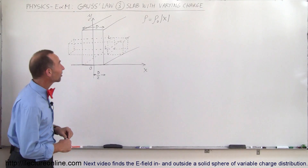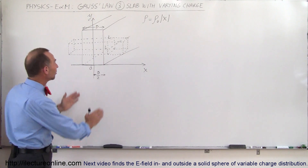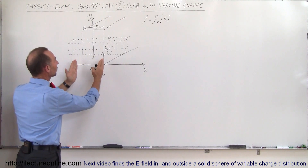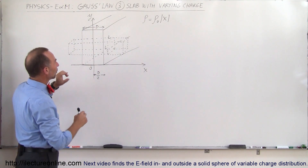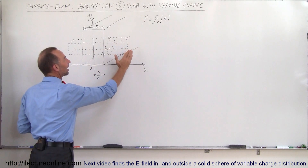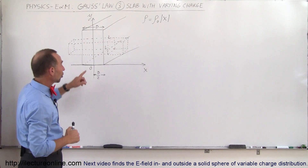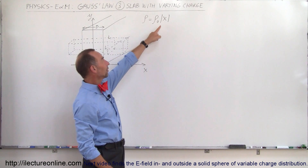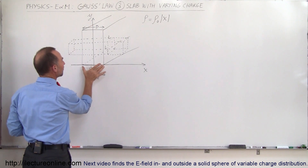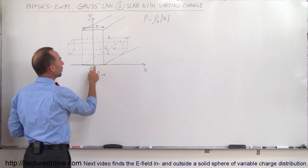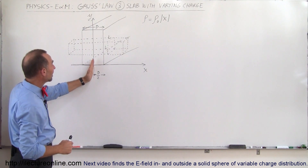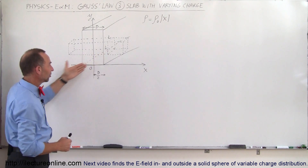Welcome to ElectronLine. Here we have a nice example that works perfectly with Gauss's law. It's an infinite slab — imagine an infinite slab in all directions with a thickness equal to d — and we're going to use a Gaussian surface to figure out what the electric field is like outside and inside the slab. When we put the slab at the origin of the xy plane, half the slab is on the positive side of the x-axis and the other half is on the negative side.